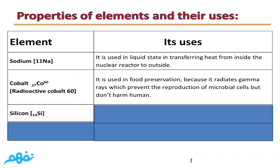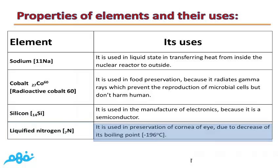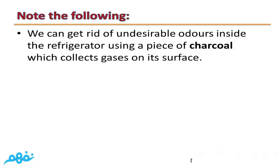Silicon (Si) is used in the manufacture of electronics because it is a semiconductor, or metalloid. Liquefied nitrogen is used in the preservation of corneas due to its very low boiling point of negative 196 degrees Celsius. Also, undesirable odors inside a refrigerator can be eliminated using a piece of charcoal, which collects gases on its surface.